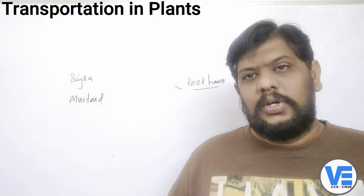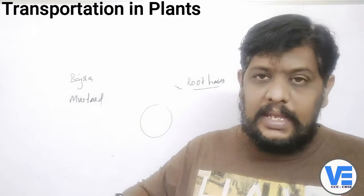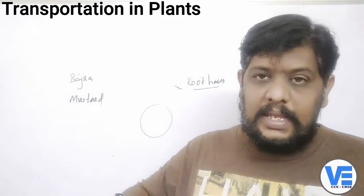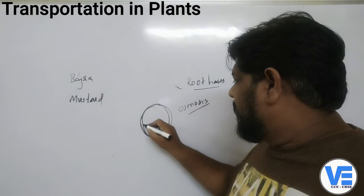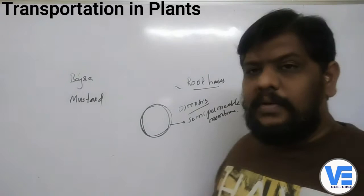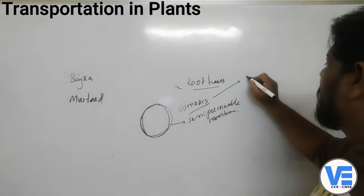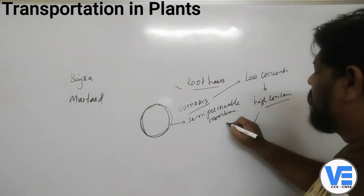Each and every cell, whether it is in the root hairs or the roots, exerts osmosis. The cell membrane or cytoplasmic lining acts as the semi-permeable membrane. Osmosis is the movement of molecules from low concentration to high concentration through a semi-permeable membrane.